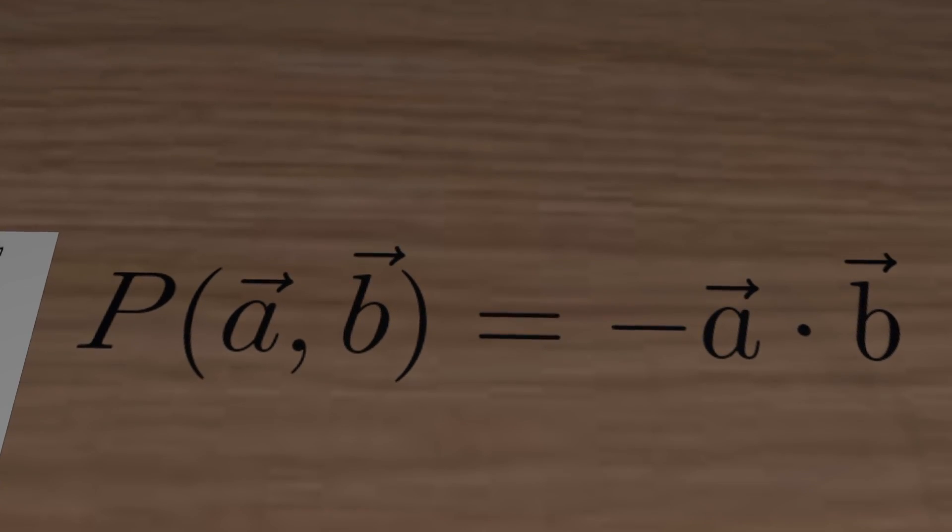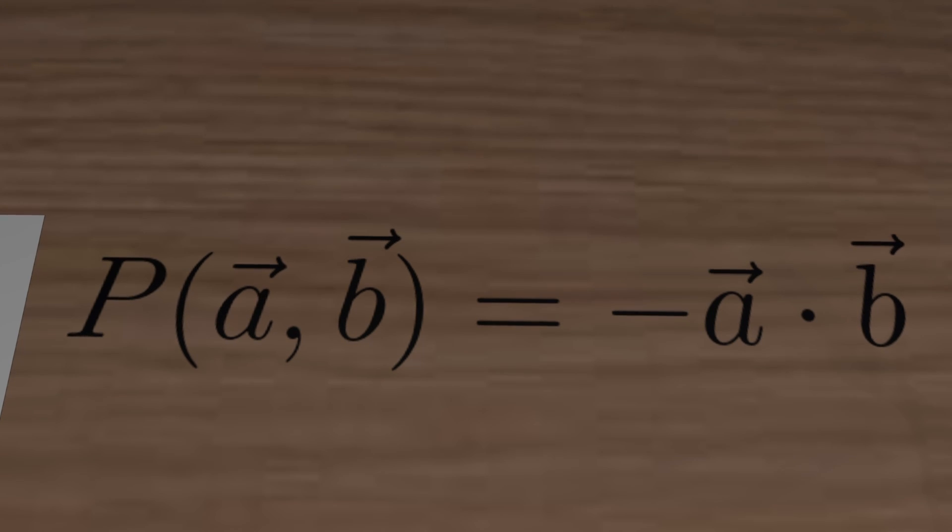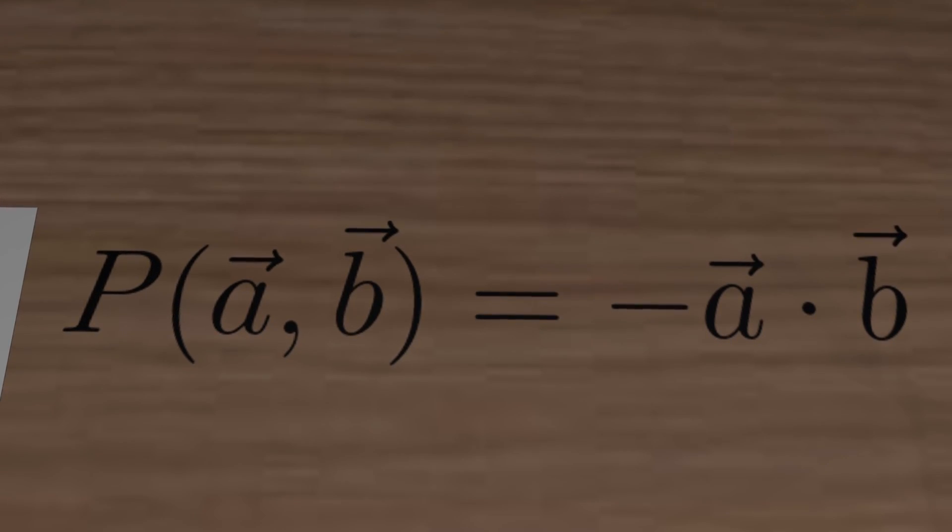Notice that if A and B are parallel, the result will be minus one, and if A and B are orthogonal, the result will be zero.